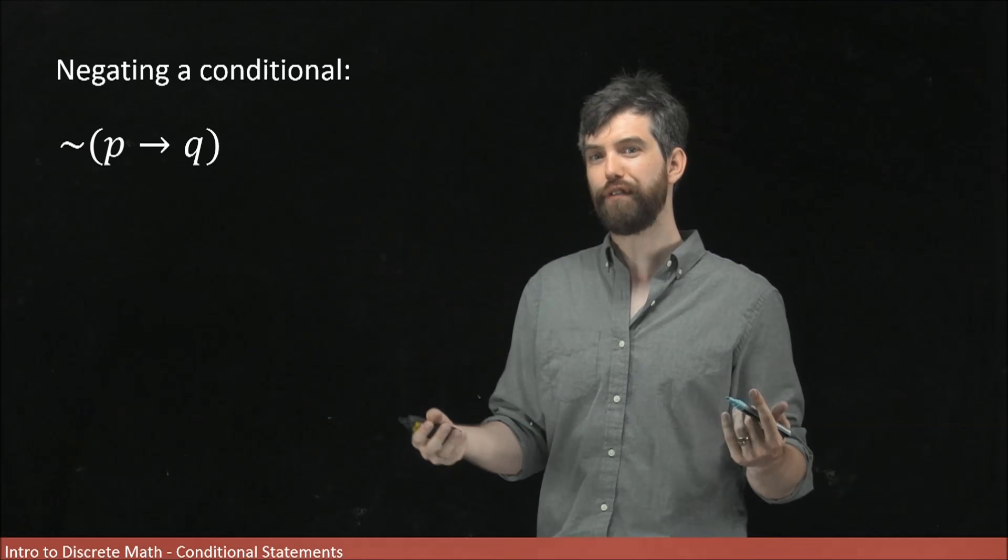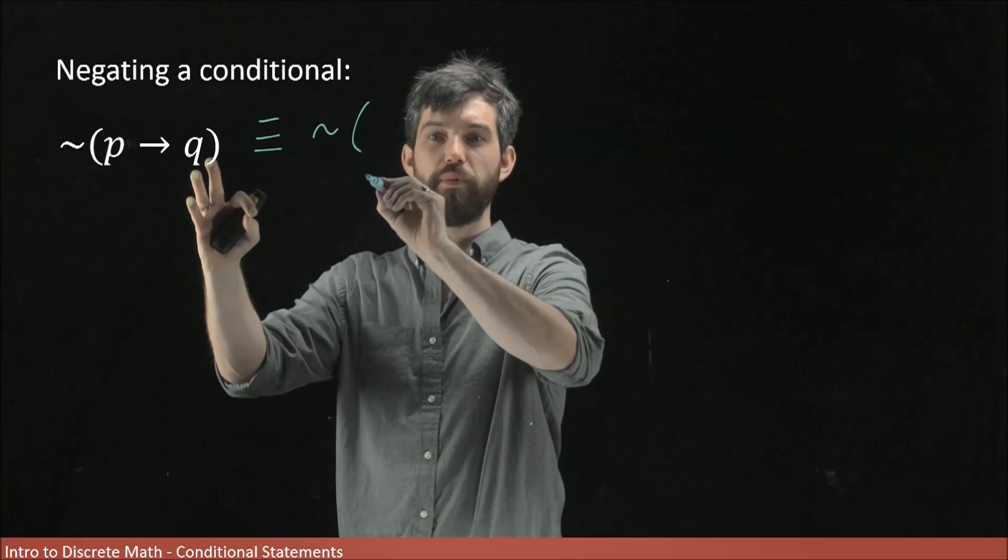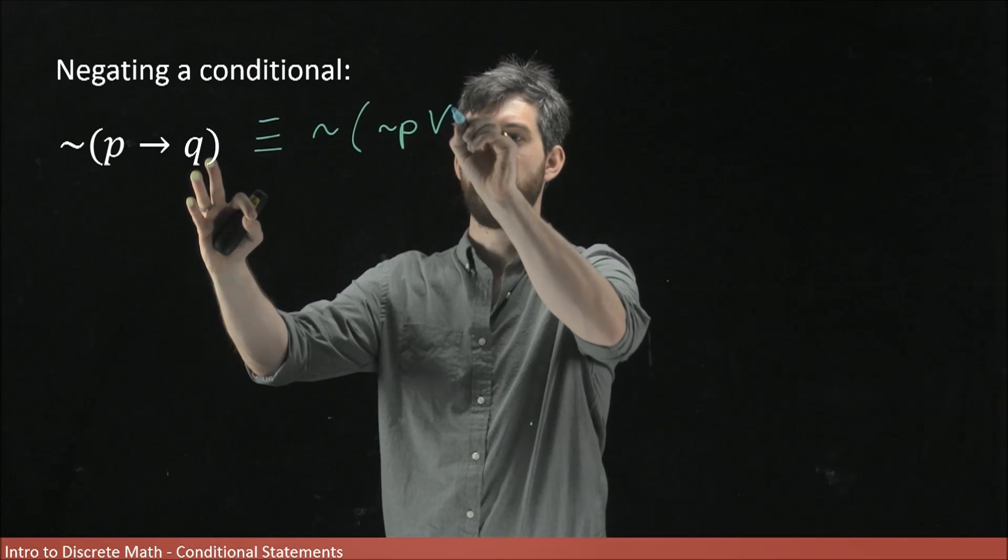So the first thing I can say is that we know I can take this p implies q, and we've just shown that this is logically equivalent to—I'm not changing the not here at all—but we know that the inside, the conditional, is logically equivalent to not p or q.